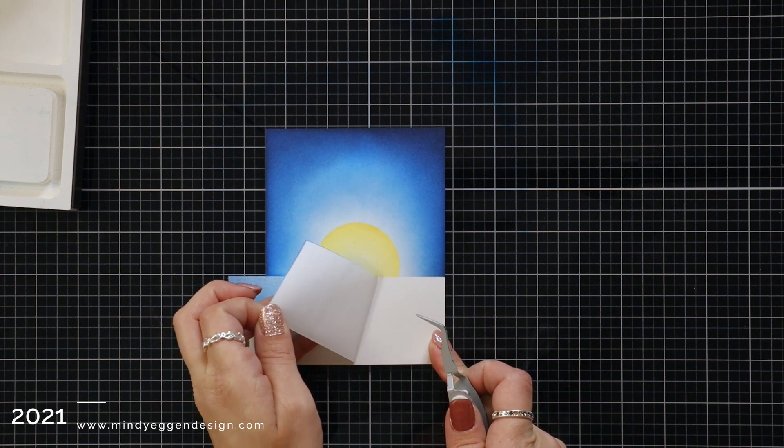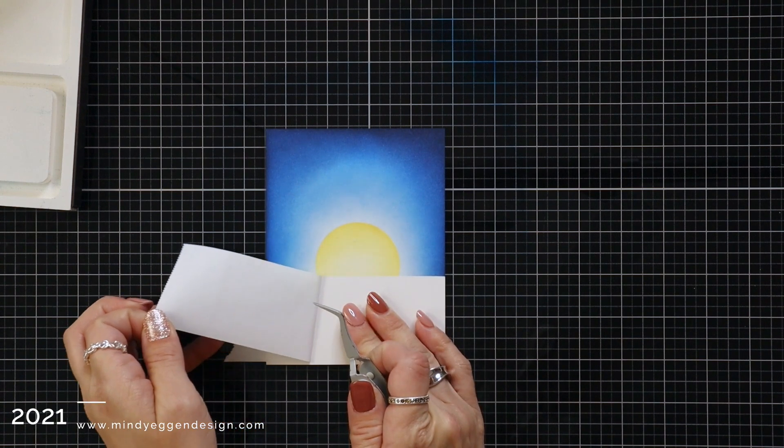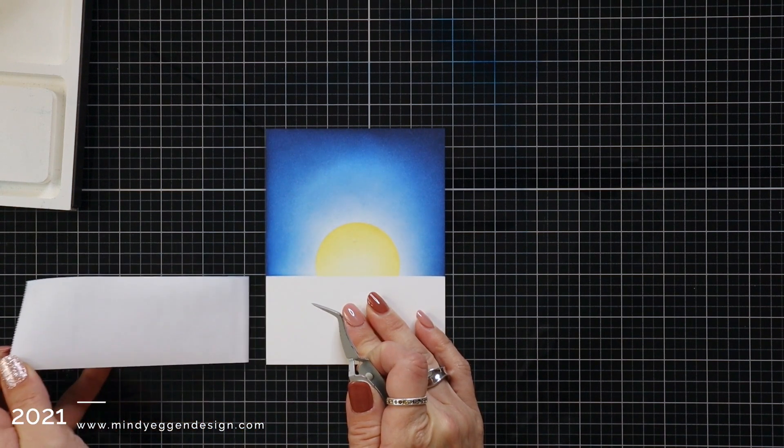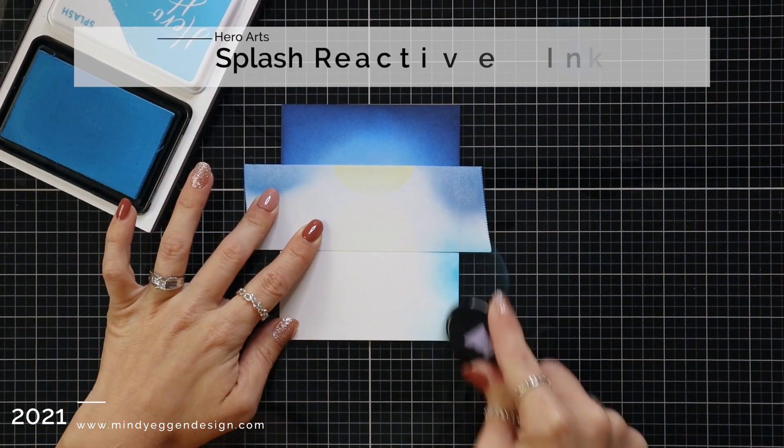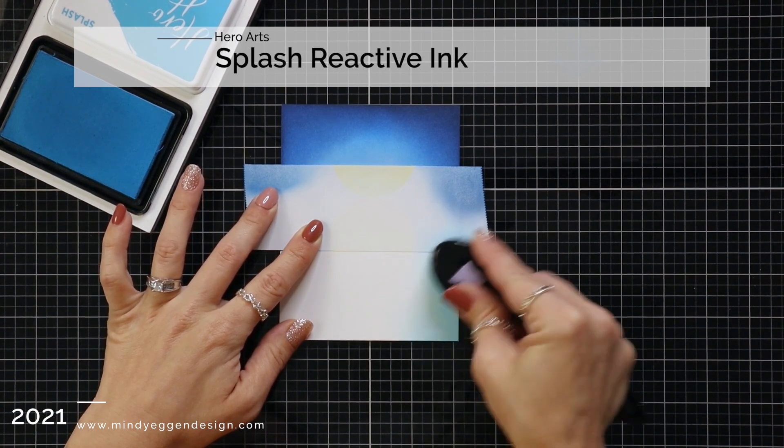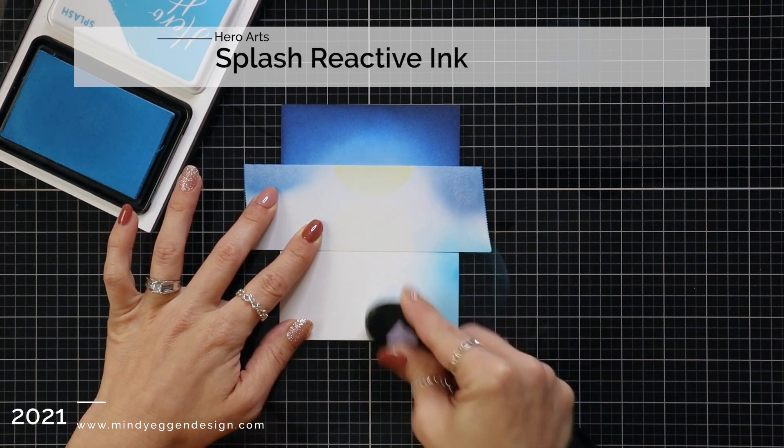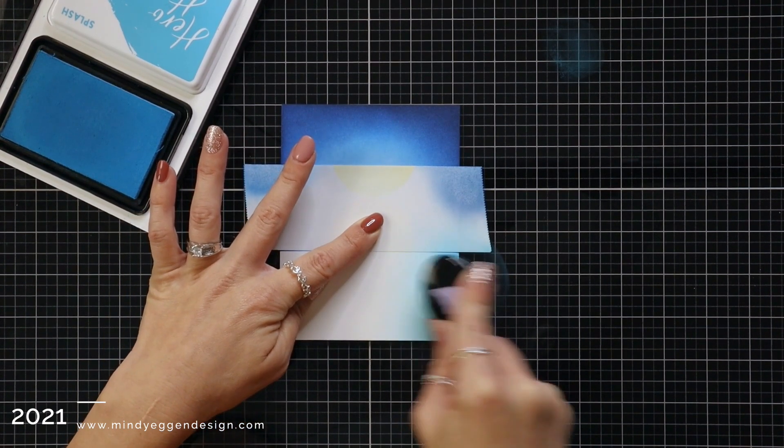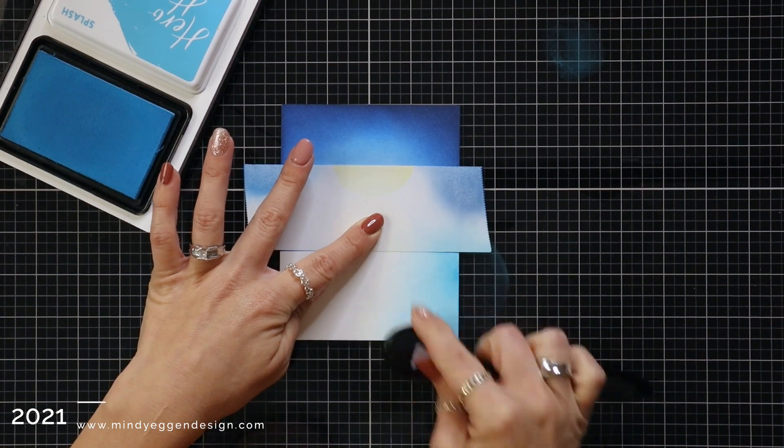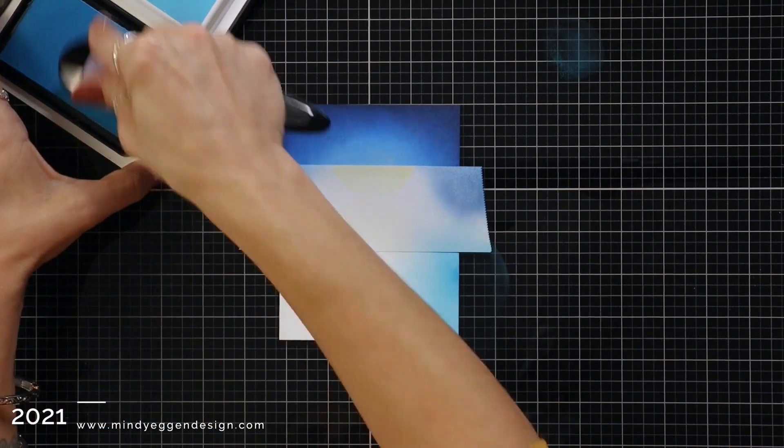Then I can pull up this post-it tape. I'm going to use that same piece of tape to mask off the top portion of my card. I just need where the moon and the water line is. I don't need to mask off the entire thing right now. And now for the water, I am coming in with splash reactive ink, but I'm coming in from the side going in towards the center. I'll repeat that on the other side too.